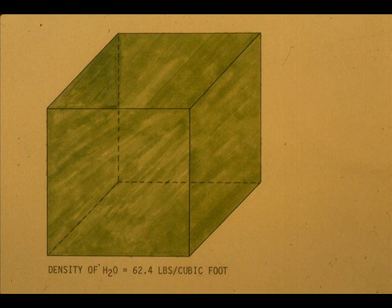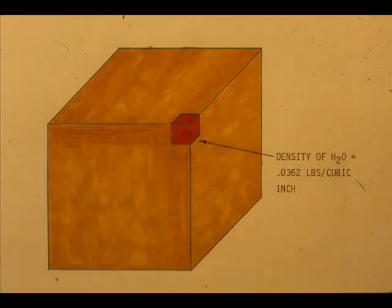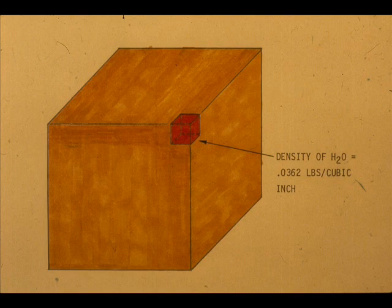Or you could say the density of water is 0.0362 pounds per cubic inch. The expression also gives weight per unit volume.